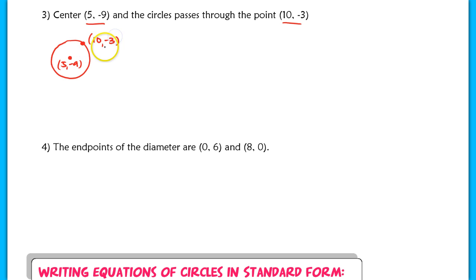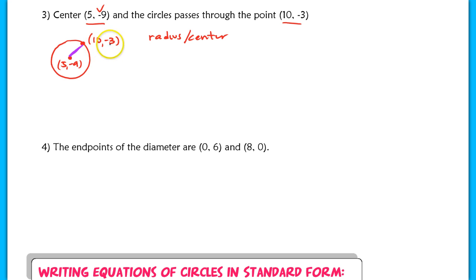Question 3 is slightly trickier because they only give you a center and another point that the circle passes through. You have a center at (5, negative 9) and a point on the circle at (10, negative 3). What you're really interested in is figuring out the radius. To write an equation of a circle, you need the radius and the center — you already have the center.